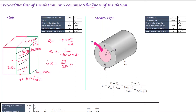At a thickness of 5mm, the heat transfer rate will be equal to 1384 Watt. If we increase the thickness to 50mm, the heat transfer rate decreases to 1028 Watt. So, if we increase the thickness of the slab, the heat transfer decreases. Now we need to apply this to a steam pipe.